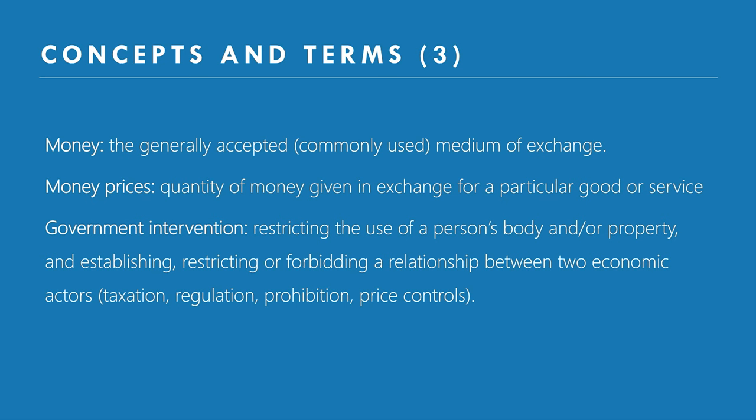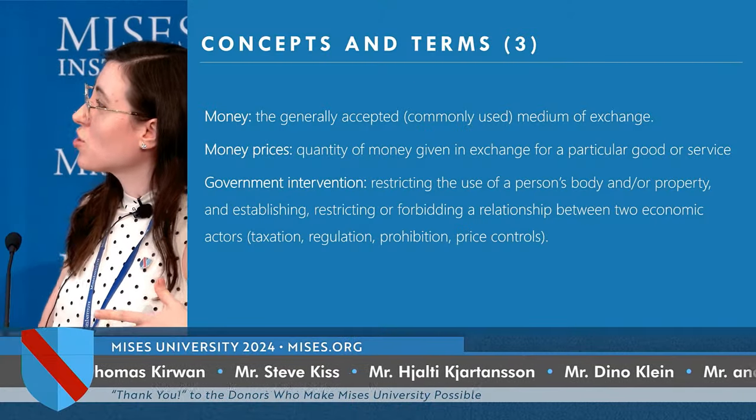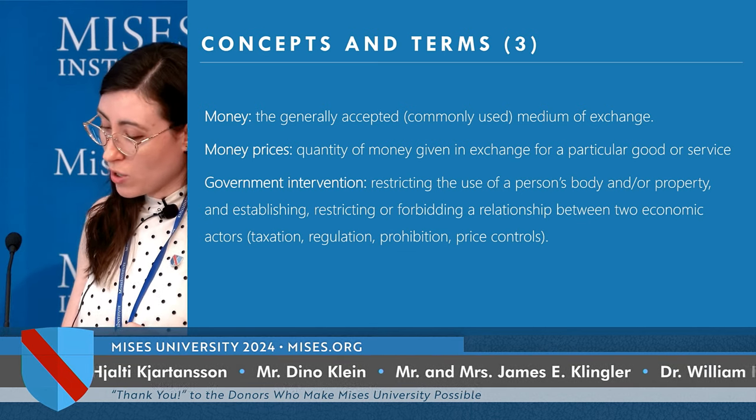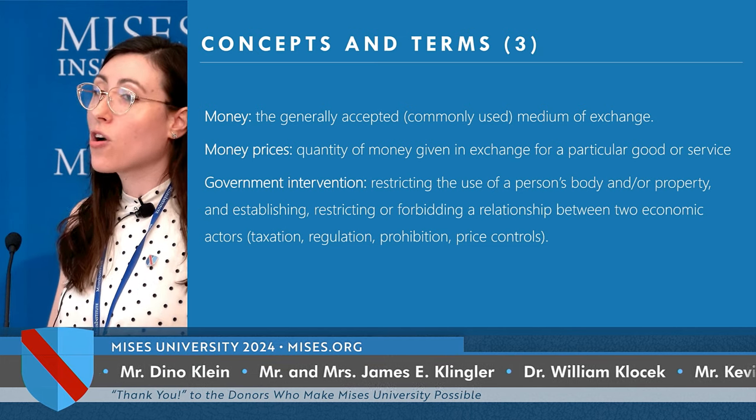Money is the generally accepted, commonly used medium of exchange. Money prices are simply the quantity of money given in exchange for a particular good or service. If money prices tell us how the division of labor needs to take place, then government intervention — everything that restricts the use of our body, our property, that forbids the relationship between two economic actors — automatically affects the fabric of the division of labor.